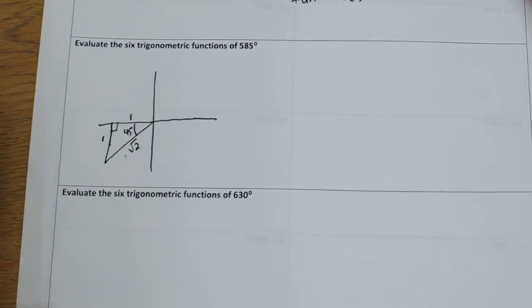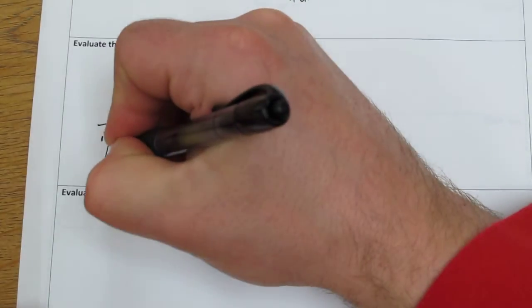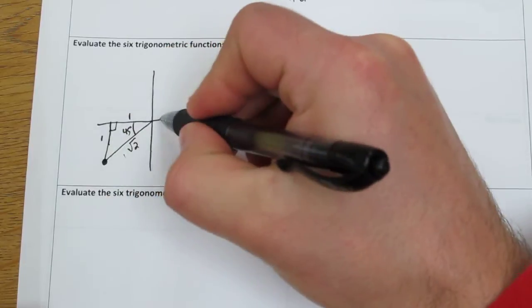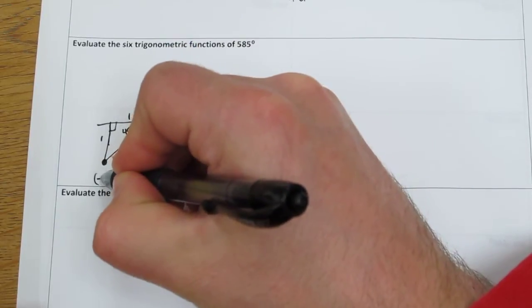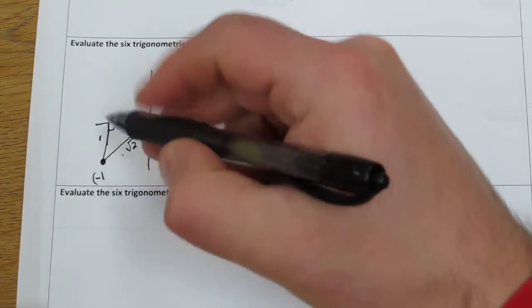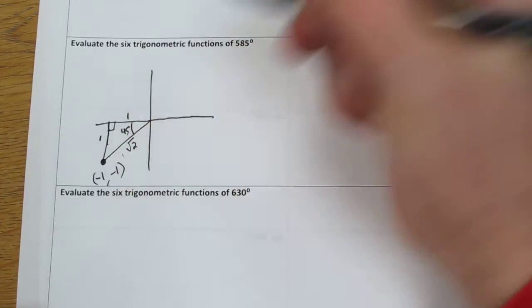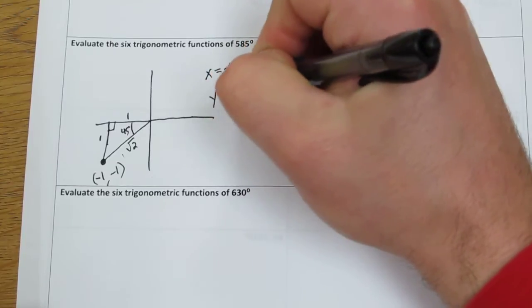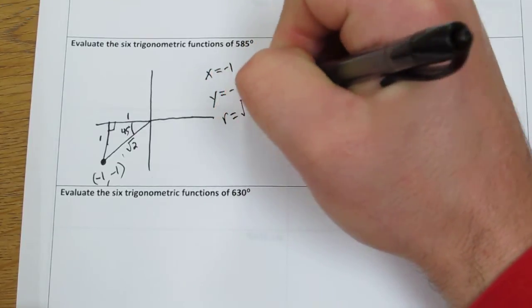The key to solving these is determining what x, y, and r are. The x-coordinate here, since we're one unit over, would be negative 1. And the y-coordinate here, since we're one unit down, would also be negative 1. So x is negative 1, y is negative 1, and r is rad 2.